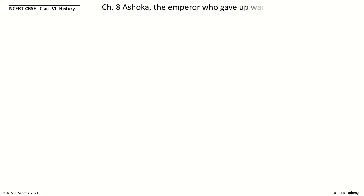Hi, welcome to NCERT CBSE Class 6 History Chapter 8: Ashoka the Emperor Who Gave Up War. In this video we will learn every point in the section 'A Very Big Kingdom Equal to an Empire,' Part 1. This comprises 12 questions.